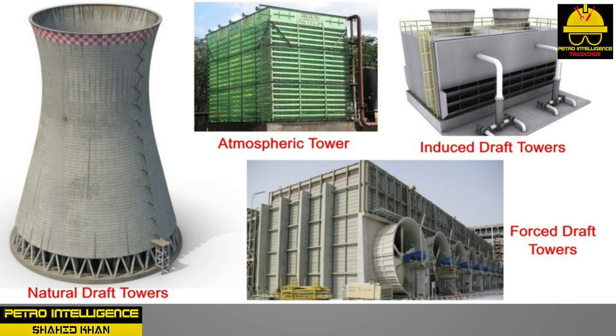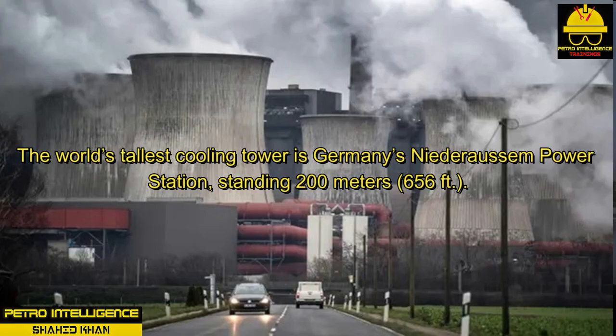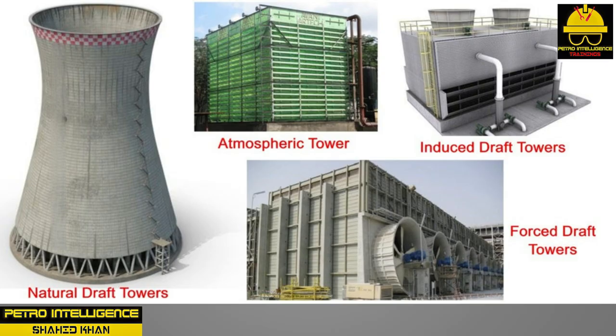The world's tallest cooling tower is Germany's Niederhausen power station, standing 200 meters or 656 feet. Wet cooling towers operate using the scientific principle of evaporation. In the chemical processing industry, examples of wet cooling towers include induced draft crossflow, force draft counterflow, atmospheric, and hyperbolic or chimney types.